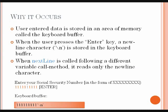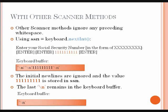A newline character designated as single quote backslash n single quote is stored in the keyboard buffer. An example of this is shown below, asking the user to enter their social security number and then press enter. The keyboard buffer holds the number plus the newline character. When nextLine is called following a different variable call method, it reads only the newline character.